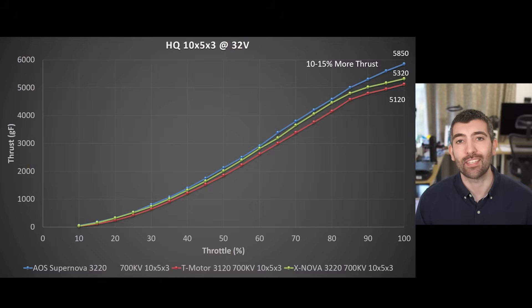Now without further ado it's time to take a look at the performance of this motor with some hard data. Let's start by looking at the data from the thrust testing and I tested these motors on HQ 10 by 5 by 3 props at 8S battery voltage, that's 32 volts. We ramped the throttle from 10 to 100% and as you can see we got these nice thrust curves. In general the T-motor 3120 700 KV generated the least thrust across the board and its maximum thrust on the HQ 10 by 5 by 3 was about 5.1 kilos or so.